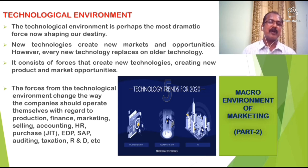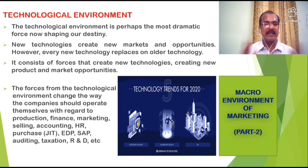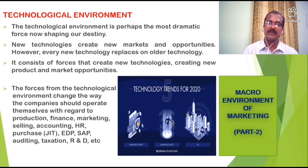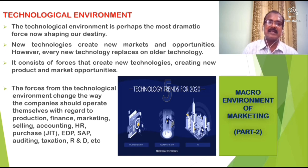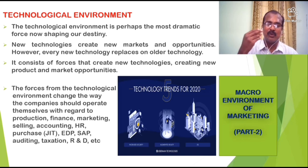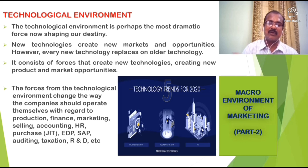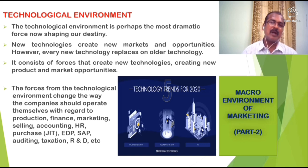The forces from the technological environment change the way a company should operate with regard to production. You cannot do production the way you were doing in the past. You have to replace machinery — now robots are being introduced in factories. If there is a necessity to replace old systems with modern technologies to improve your production and improve quality, you should not hesitate.